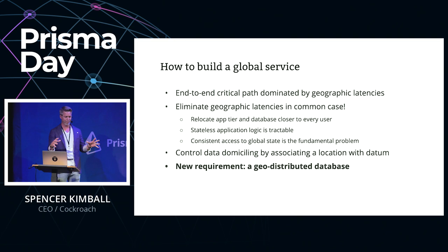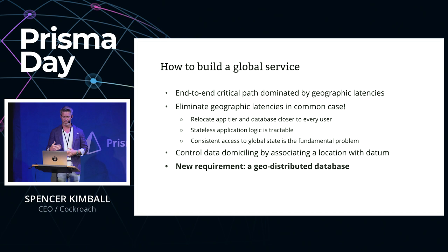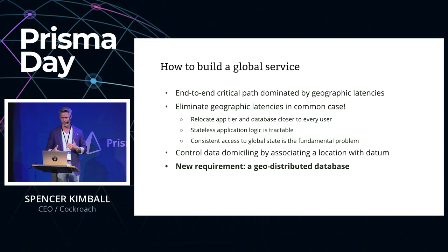You do this by making sure the app tier is close to the customer, and also the data is close to the customer. Moving the app tier close is pretty simple — these are stateless application servers, you just spin up more of them regionally closer to your users. Consistent access to global state is the hard fundamental problem that needs to be solved. You want to make a new assumption: every piece of data you're interested in has a location attached to it, and you use that to control how data is domiciled around the world.